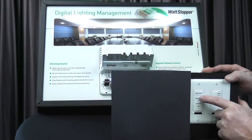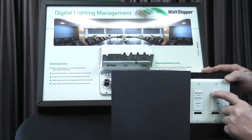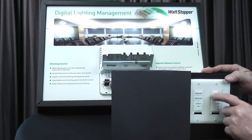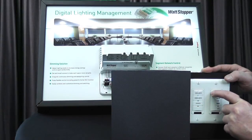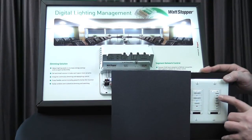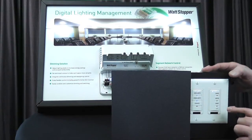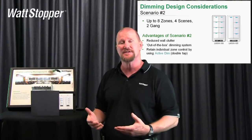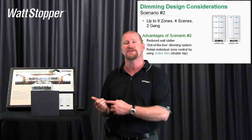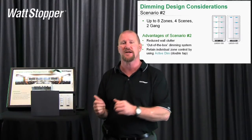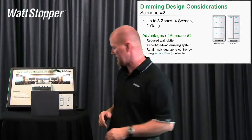Now I do the down lights: double tap, raise the down lights. Then I do the sconces: double tap, raise the sconces. We've raised everybody to 100% for our new general scene. I press and hold for five seconds, watch until the LED blinks, and let go. That's my new scene one. I still have the ability to individually adjust each load and set scenes, but I've cut the wall space down to two gangs.